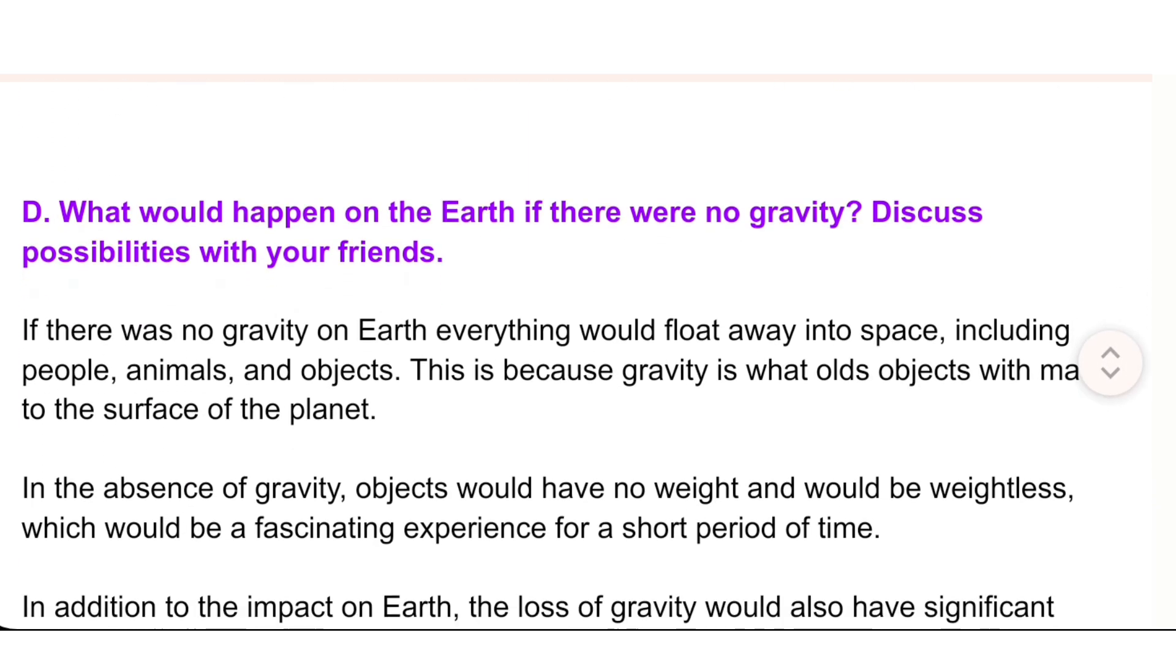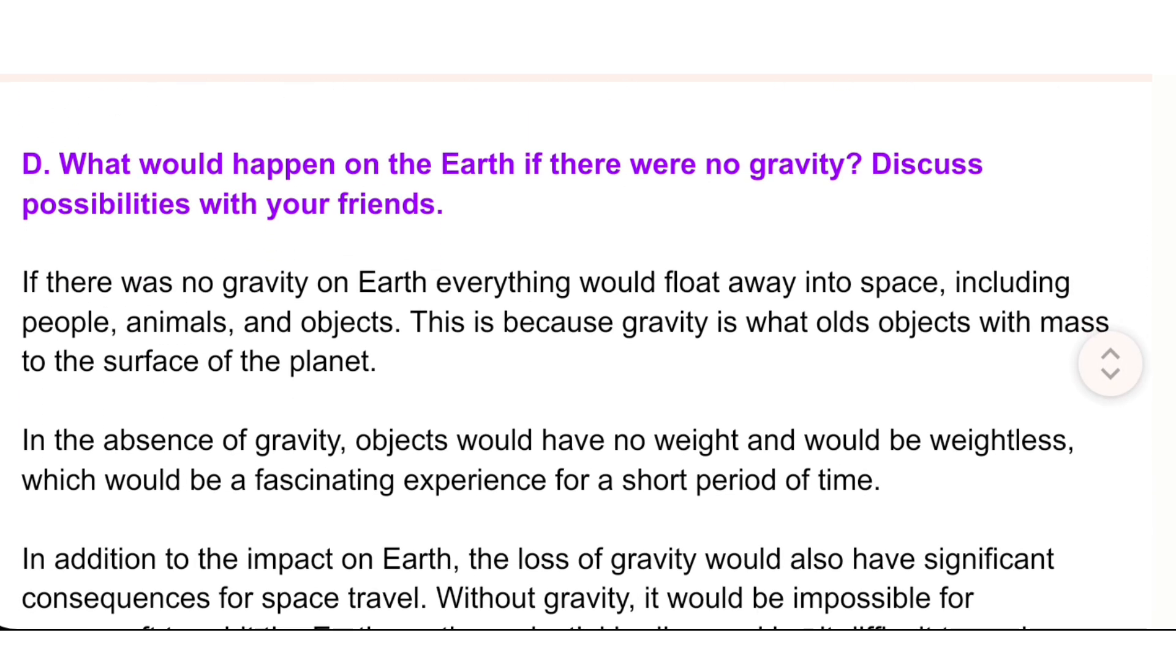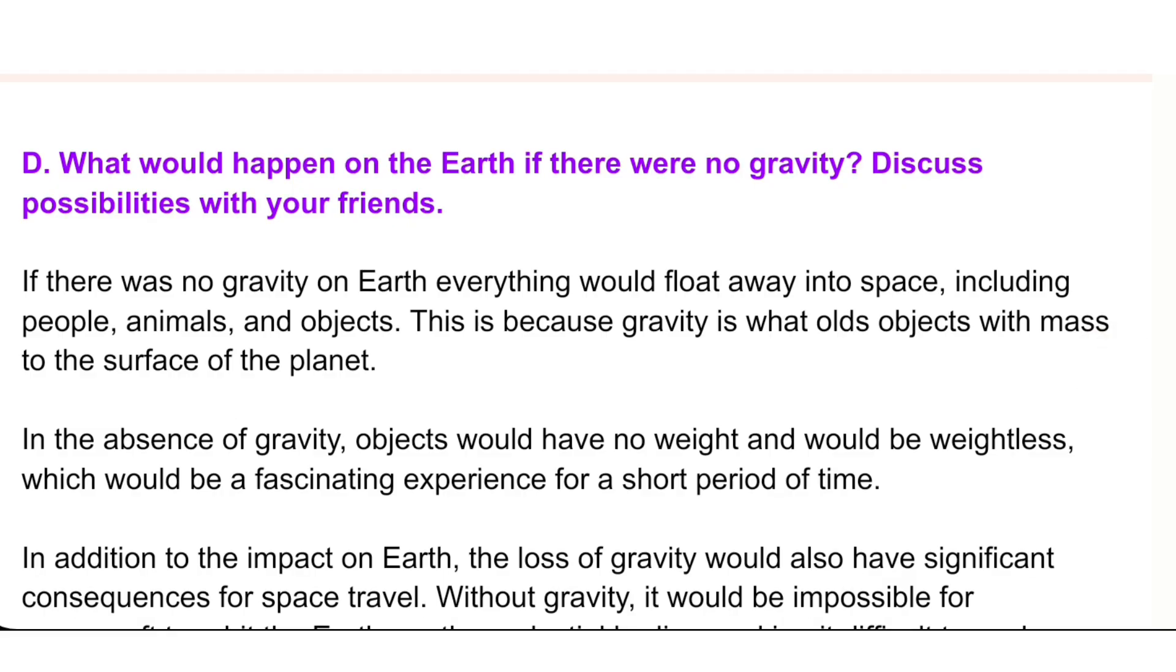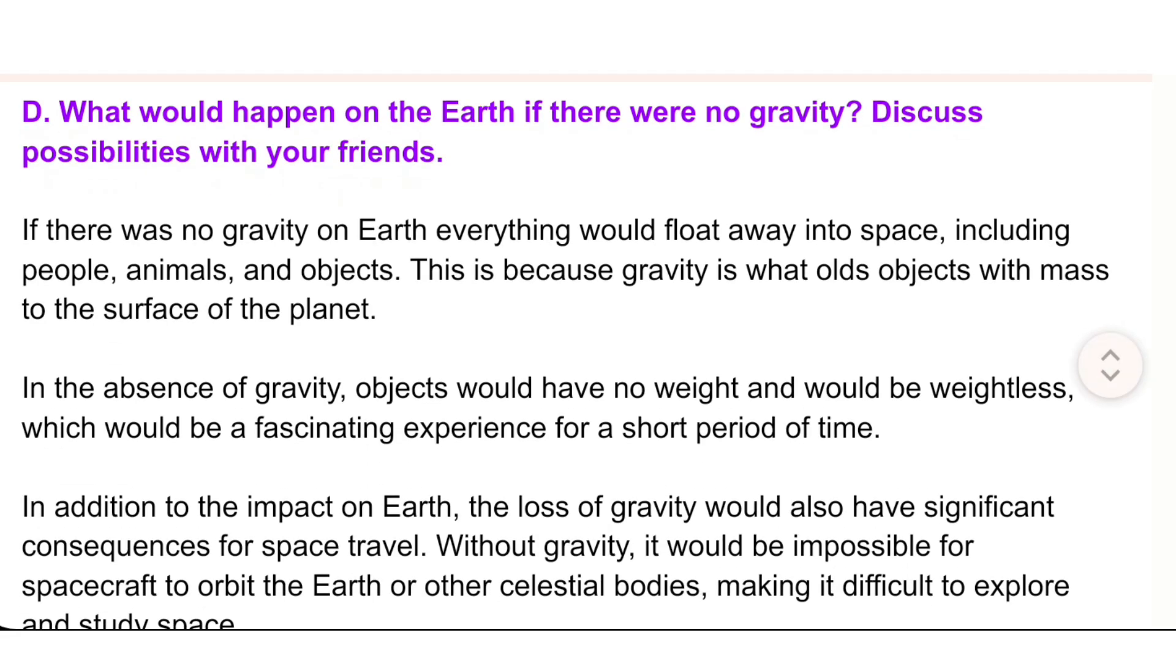D. What would happen on the Earth if there were no gravity? Discuss possibilities with your friends. If there was no gravity on Earth, everything would float away into space, including people, animals, and objects. This is because gravity is what holds objects with mass to the surface of the planet.